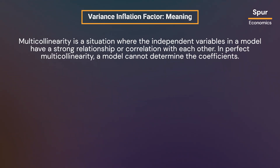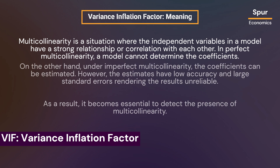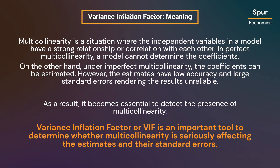Multicollinearity is a situation where the independent variables in a model have a strong relationship or correlation with each other. In perfect multicollinearity, a model cannot determine the coefficients. Under imperfect multicollinearity, the coefficients can be estimated; however, the estimates have low accuracy and large standard errors, rendering the results unreliable. As a result, it becomes essential to detect the presence of multicollinearity. Variance inflation factor, or VIF, is an important tool to determine whether multicollinearity is seriously affecting the estimates and their standard errors.